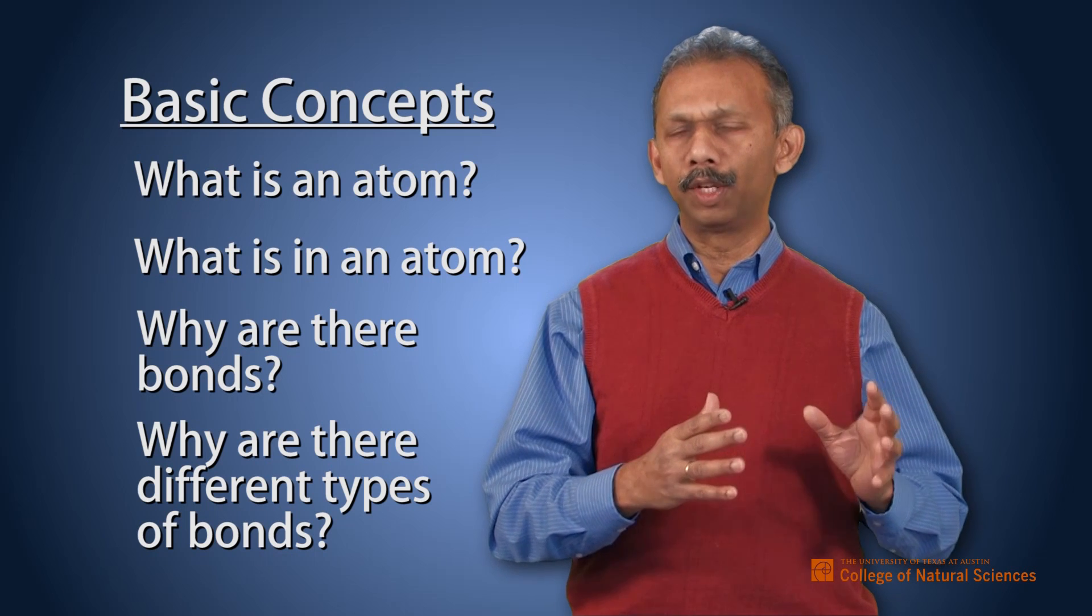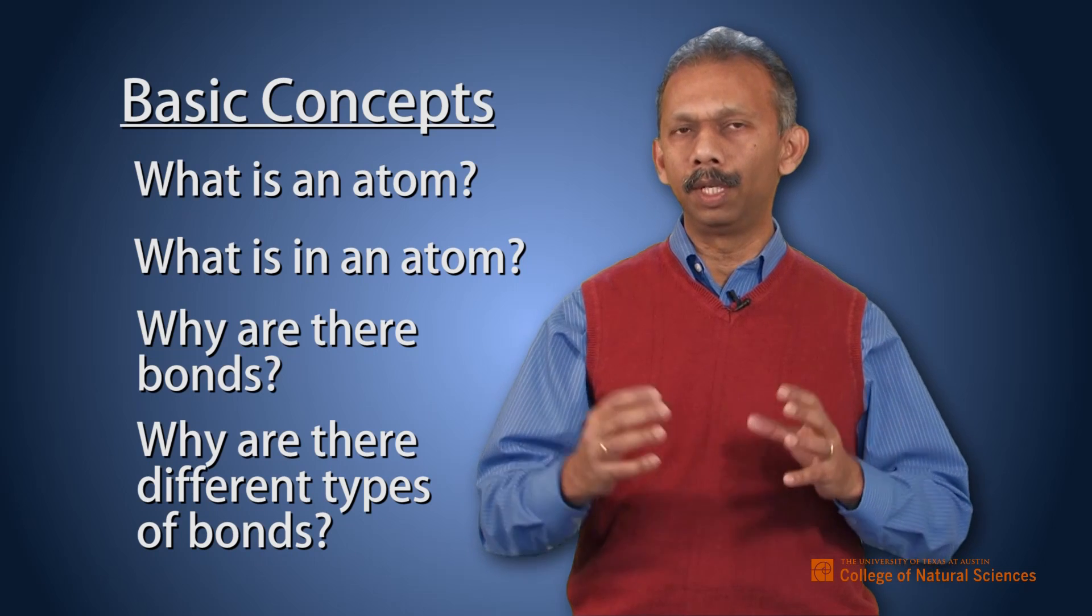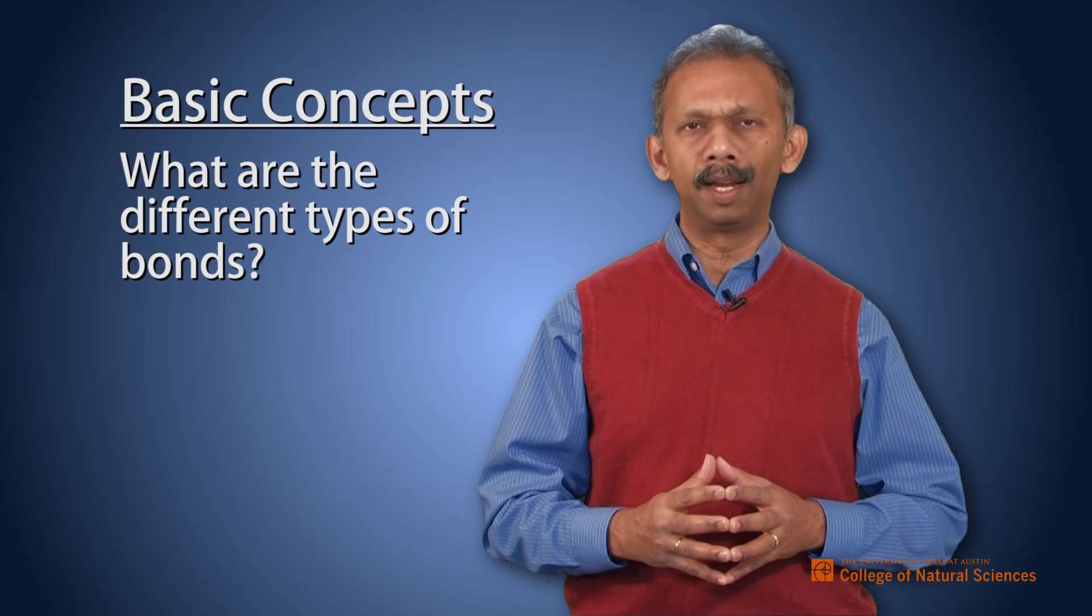So once you go past that basic concept of understanding atoms, particles, electronegativity, or octet rule, then the next part of this is what are the different types of bonds and interactions.